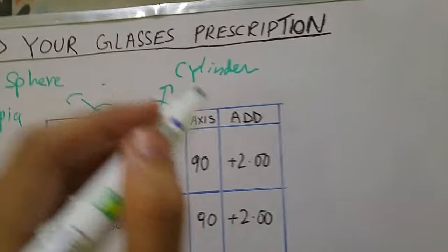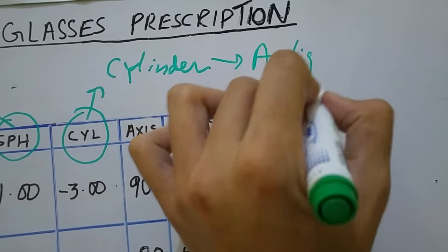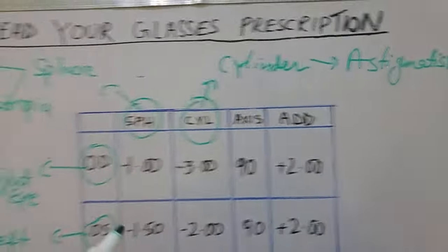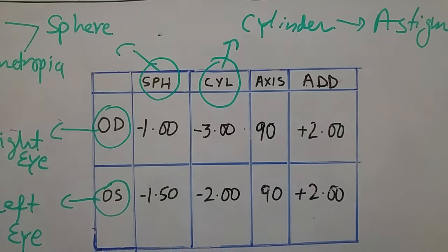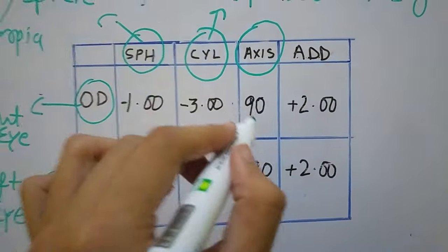While cylinders are prescribed in case of astigmatism. Then cylinder can act at one particular axis, and the next column here, axis, represents the axis of cylinder that are prescribed to you.